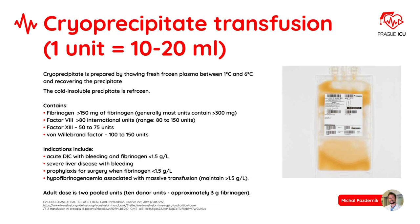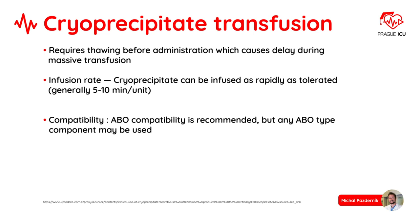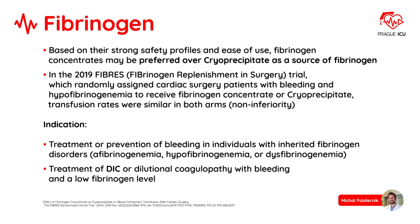Cryoprecipitate requires thawing before administration, which causes delay during massive transfusion. Cryoprecipitate can be infused as rapidly as tolerated. ABO compatibility is recommended but any ABO type component may be used. Based on their strong safety profiles and ease of use, fibrinogen concentrates may be preferred over cryo as a source of fibrinogen.